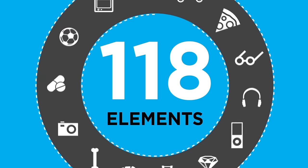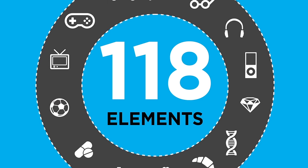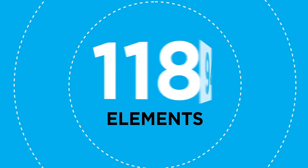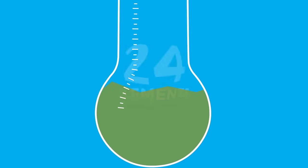Everything around us is made up of at least one of these elements. 94 of these elements can be found in nature, and the rest were obtained in laboratories.